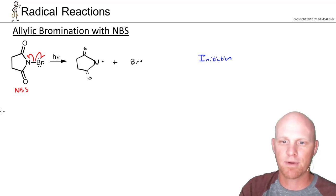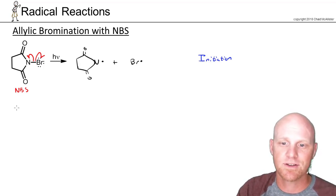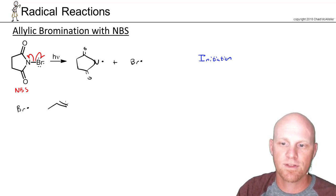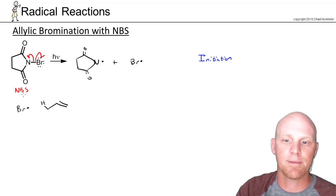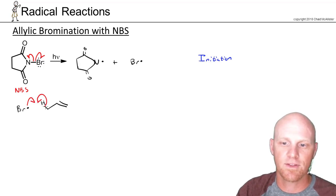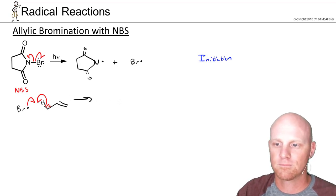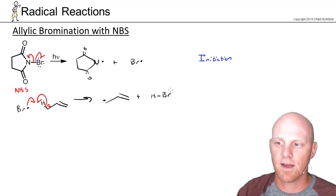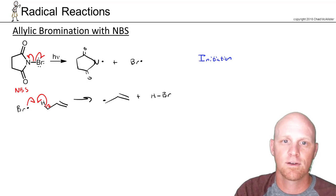Proceeding to the propagation steps: we take our bromine radical and react it with our allylic species, doing another homolytic cleavage to abstract a hydrogen. This bond breaks, and the other electron in that bond goes back to carbon, leaving us with an allylic radical and a newly formed molecule of HBr.